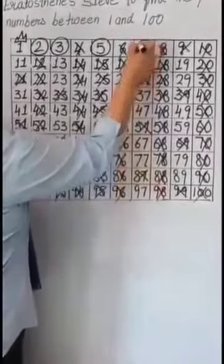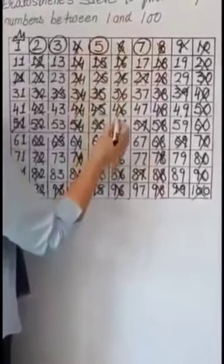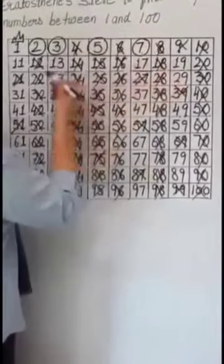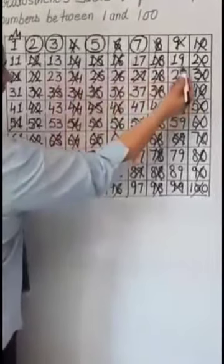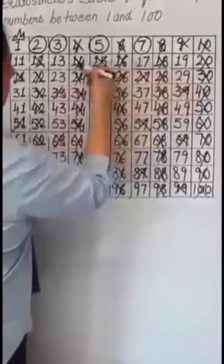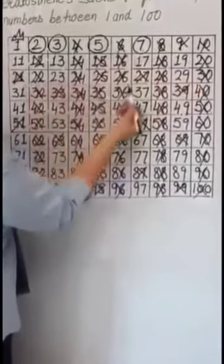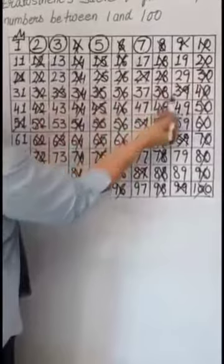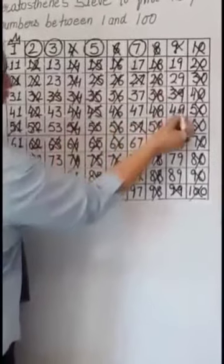Now we encircle 7. 7 is a prime number. We will cut the multiples of 7: 14, 21, 28, 35, and now 49. 7 times 7 is 49.